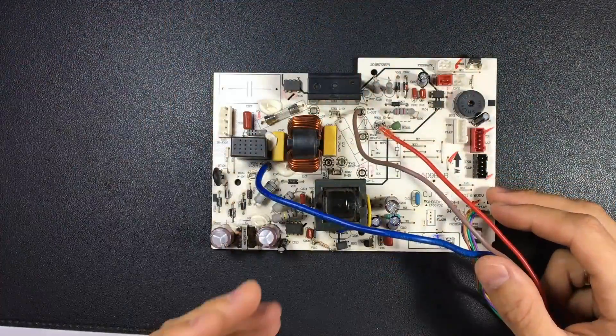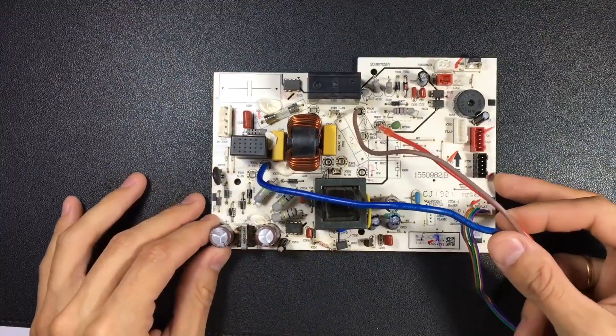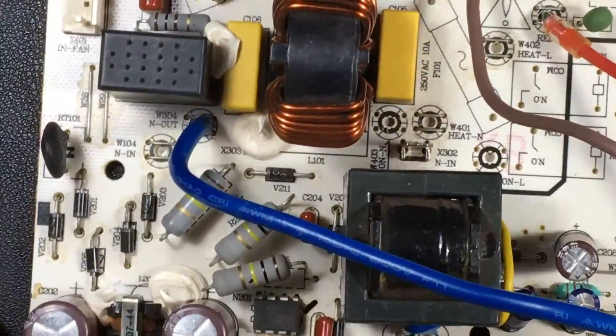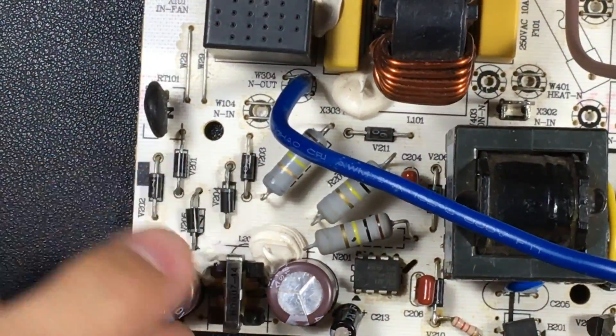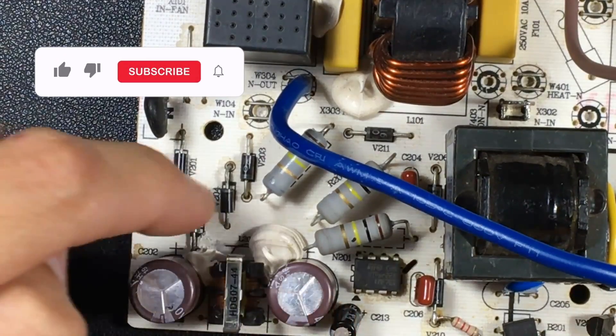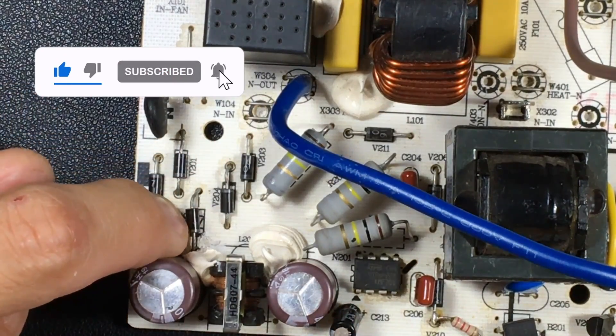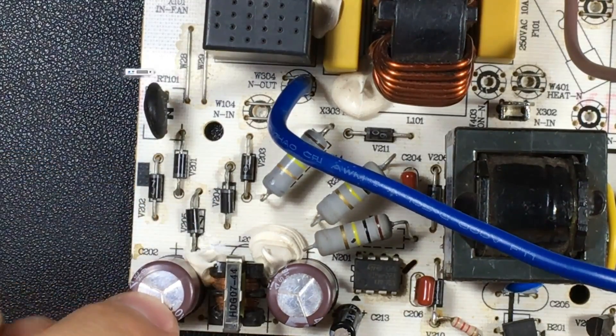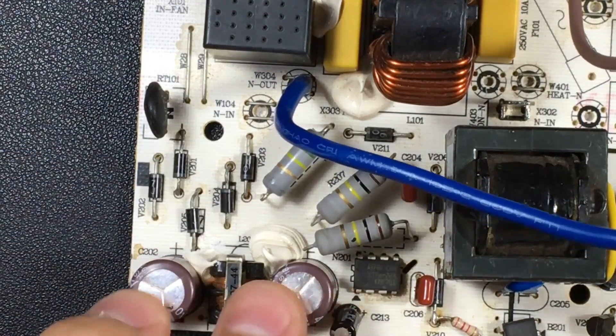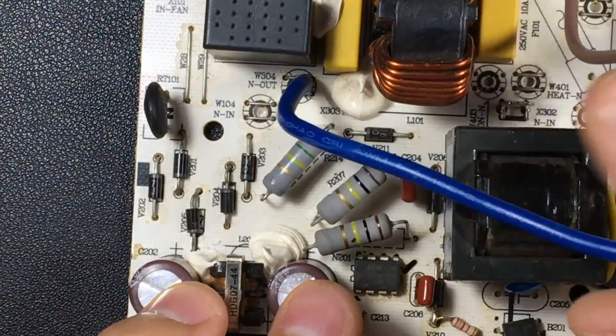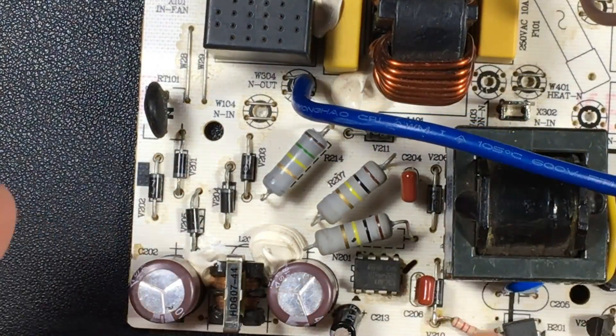In the source part we have already analyzed a very important area which is diodes and capacitors. We have already been talking about the four rectifying diodes, the fifth division diode, the capacitors which in this case are two. Now we are going to follow this circuit and understand it, but that is not the only thing that is involved in a source area.